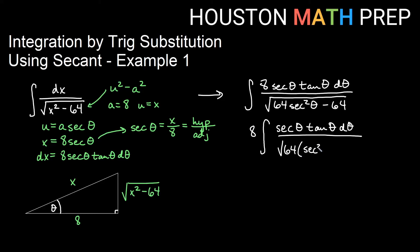we get exactly a Pythagorean identity, secant squared theta minus 1. We'll factor out the square root of 64, which is an 8. So the 8 will reduce with the 8 that we get from the root down below.